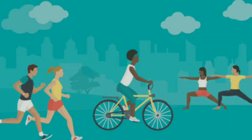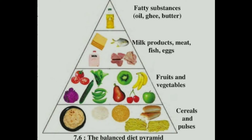Apart from having a balanced diet, we also need to exercise regularly to keep ourselves fit and healthy. To ensure we get a balanced diet, we can make a food pyramid. All food we eat is classified into various groups. The space allotted to each food group in the pyramid depends upon the proportion in which it should be included in our diet. We can choose foods from each group daily according to the space allotted to it in the pyramid.